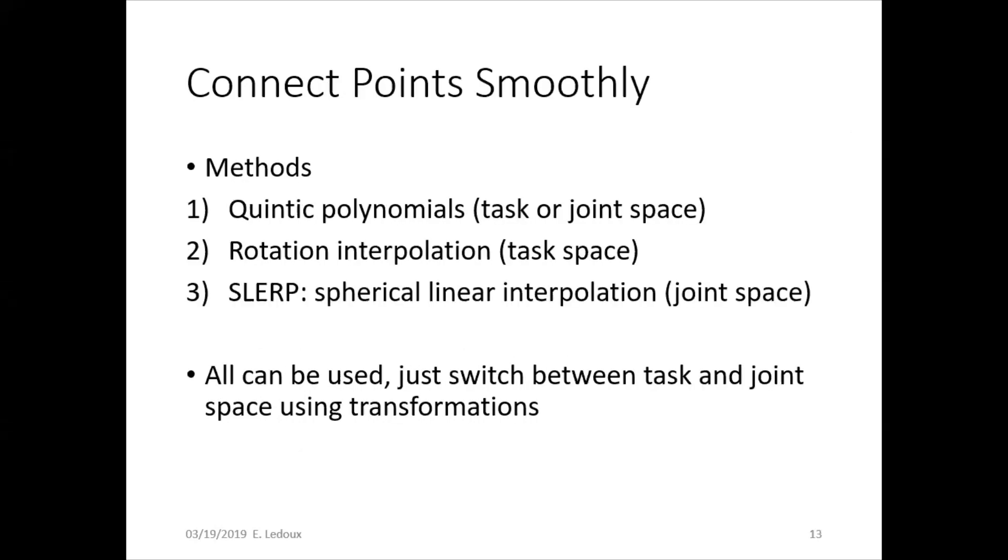Now, the ways of connecting the points smoothly, there are three of these. Quintic polynomials can be done in task space or in joint space. So task space is the XYZ roll pitch yaw of the end effector being controlled, and then joint space is the individual joint angles of the robot being controlled.